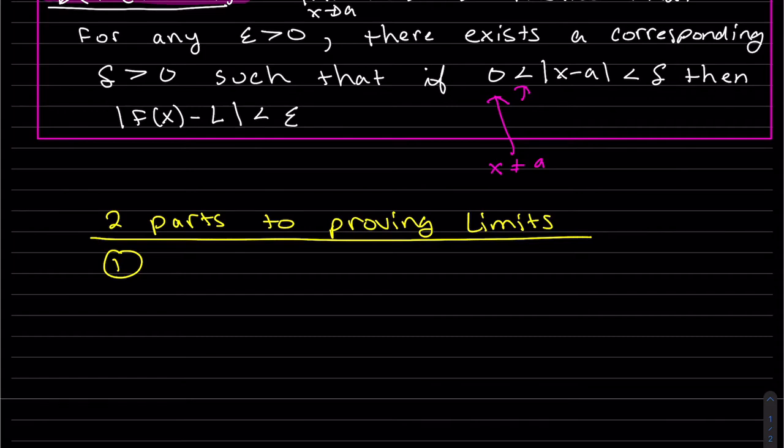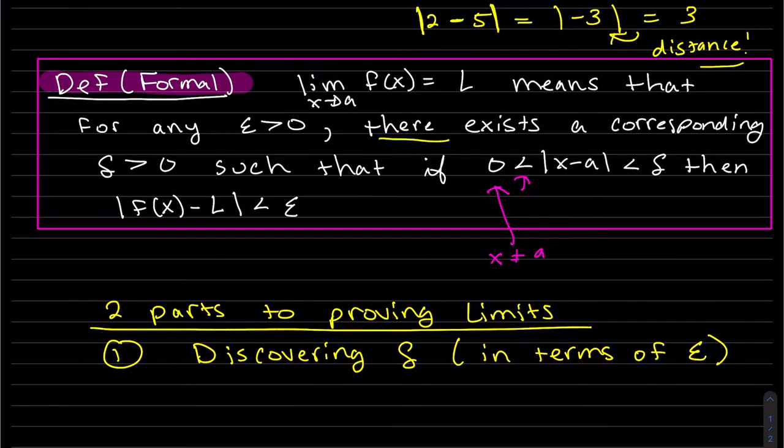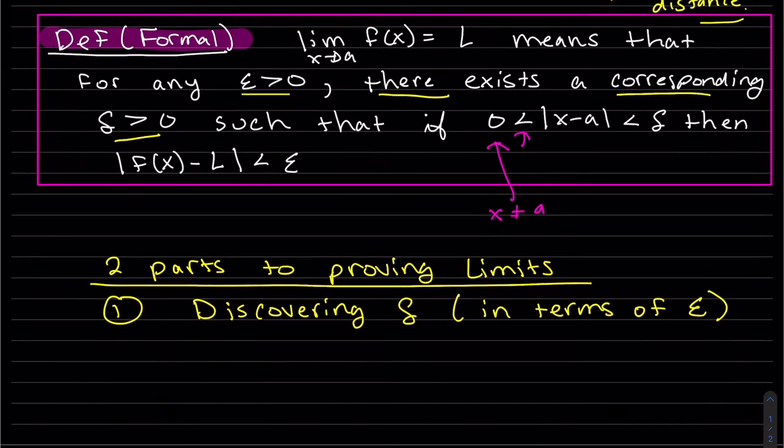The first part is discovering delta. We're trying to find delta in terms of the given epsilon. Because remember, it says there exists, once you know there's an epsilon greater than zero, there exists a corresponding delta. We need to find that corresponding delta.